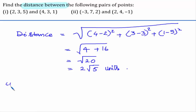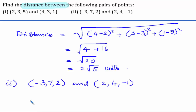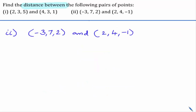Let us see the second part now. The given points are (-3, 7, 2) and (2, 4, -1). Let us substitute into the formula to get the distance.